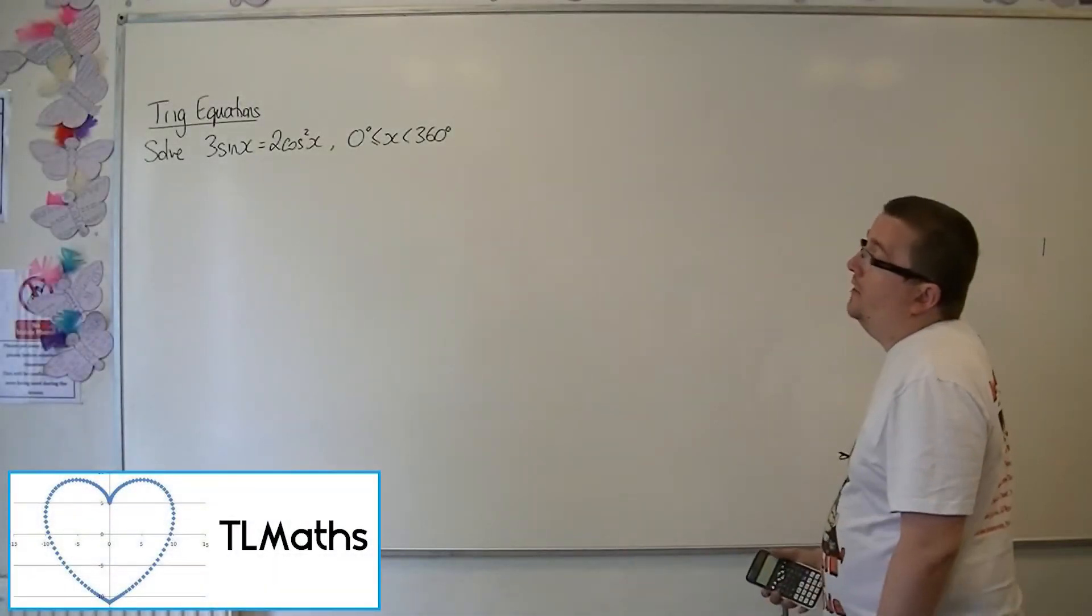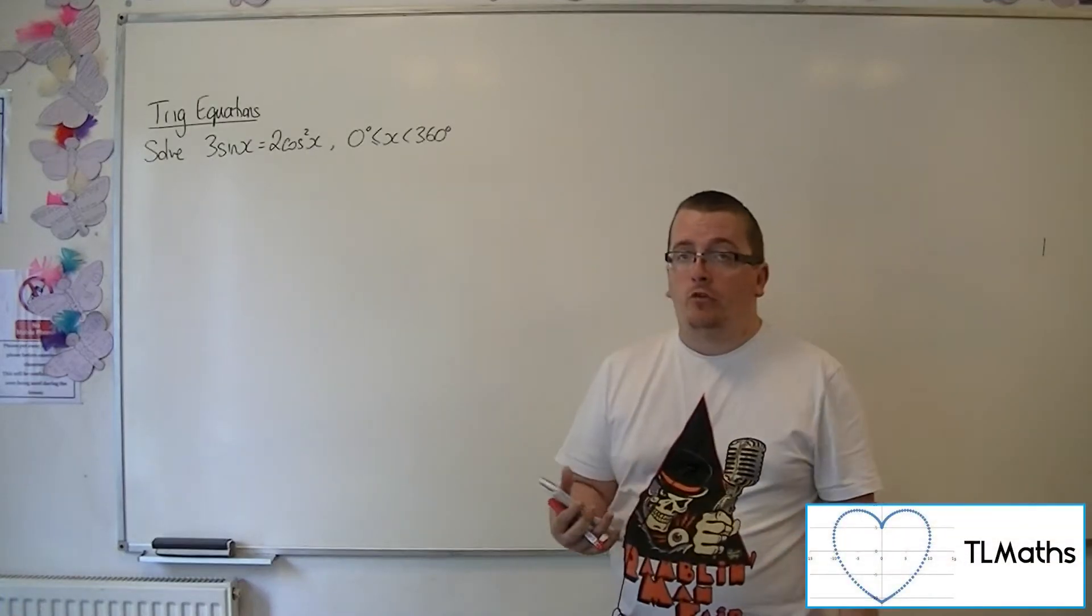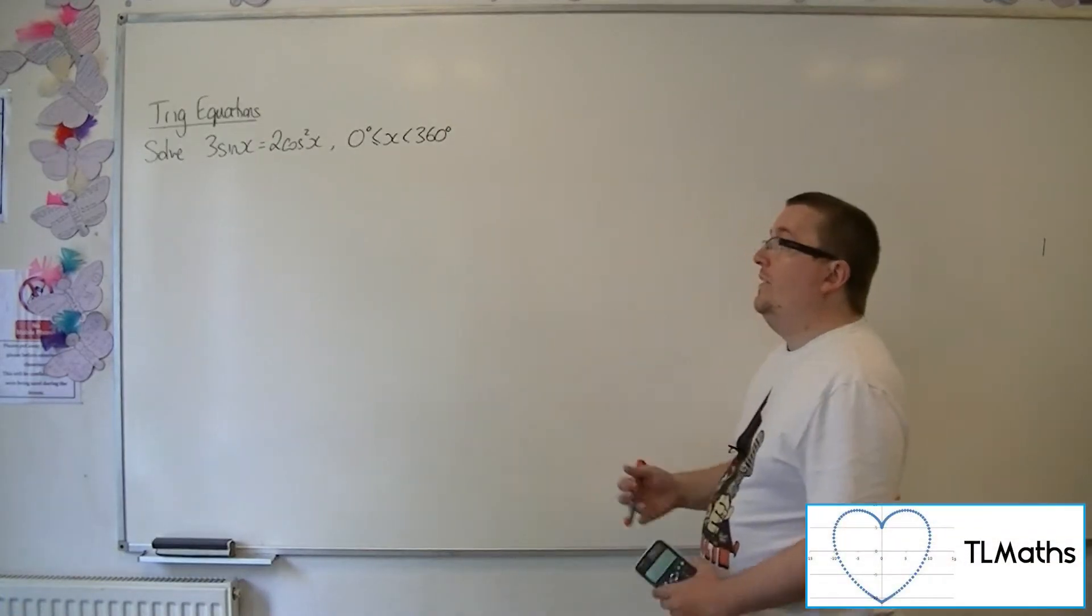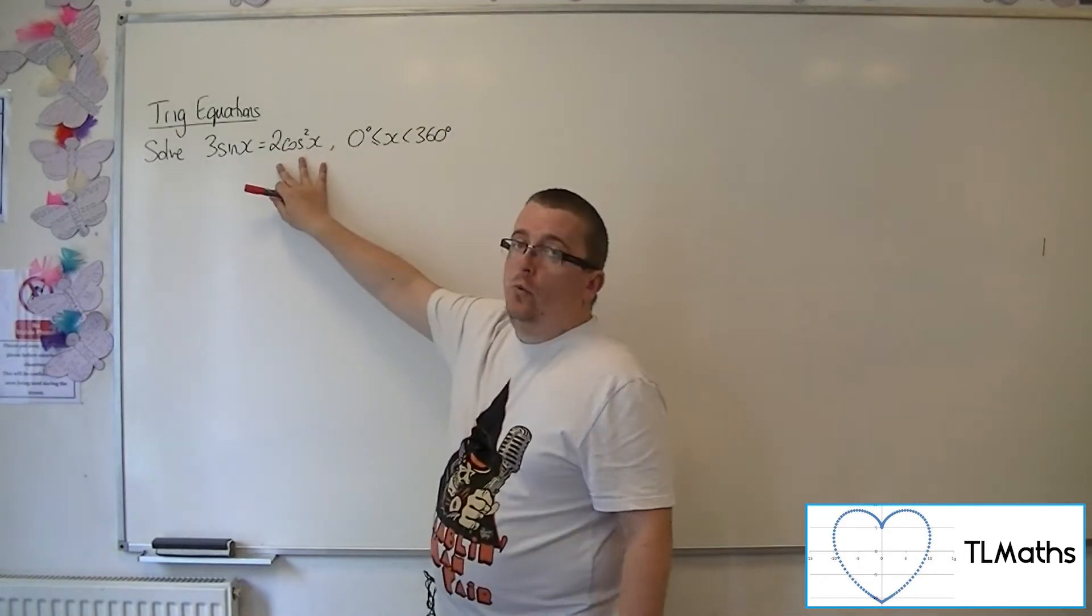So let's say I need to solve 3 sine x equals 2 cosine squared x between 0 and 360 degrees. This is a quadratic equation again. I've got this cosine squared this time.